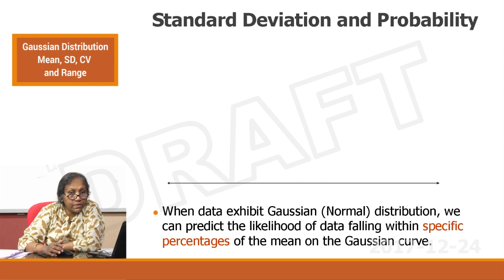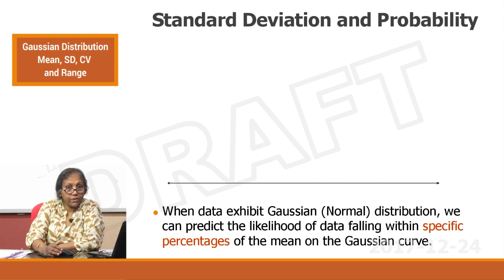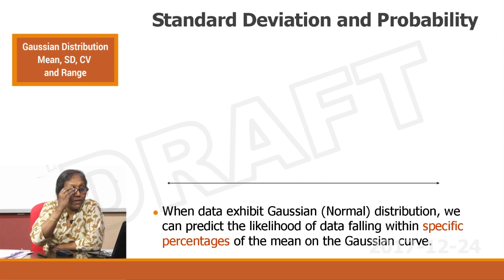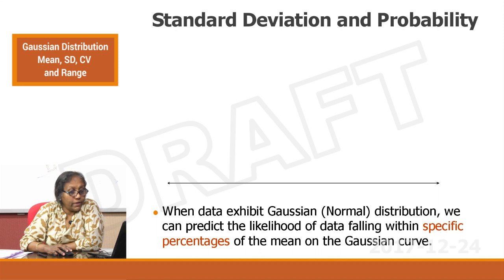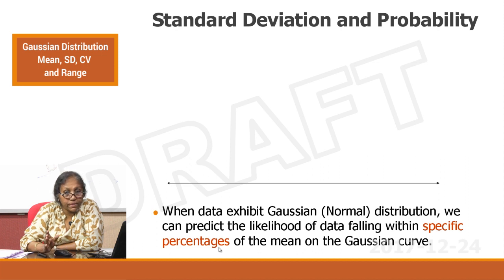Let us see how standard deviation and probability are related. When data exhibits Gaussian distribution, we can predict the likelihood of data falling within specific percentages of the mean on the Gaussian curve.